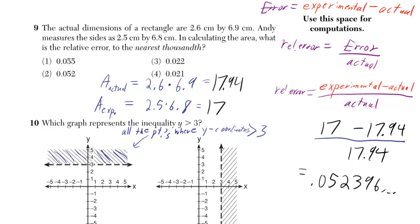We've got a problem about relative error, so we need to know the definition. Relative error is error divided by the actual amount.